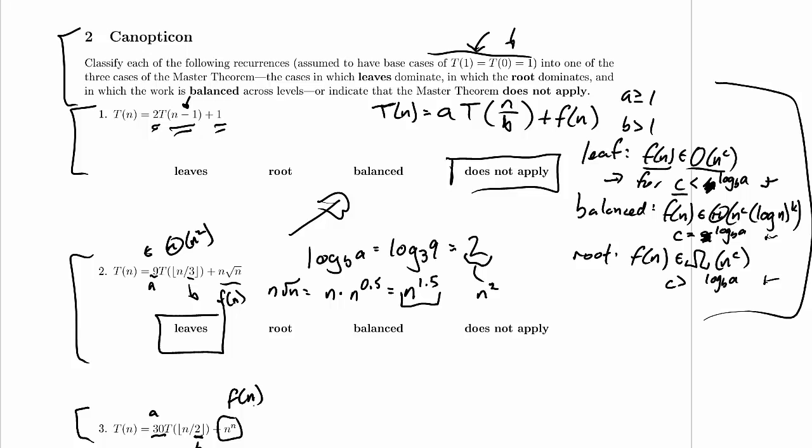Now, you might be looking at n to the n and saying, well, hold on, n to the n, that's not n cubed, it's not n to the fourth, it's not even polynomial, it's much slower than polynomial. So can we really apply the master theorem here? Well, there's nothing stopping us at this point, so let's keep going. If we can't put ourselves into one of the three cases, or we don't meet the regularity condition and we're in the root case, then we'll be in trouble. But it doesn't look, obviously, like there's any big problem.